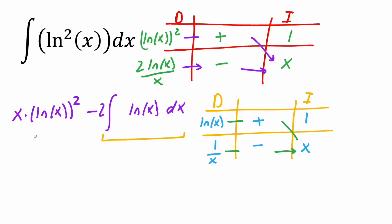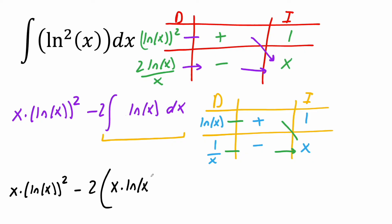Let's write it out. The first piece remains: x·ln²(x). Then minus 2, parentheses: ln(x) times 1 times x, which is x·ln(x). Then I have the integral — this piece times negative 1 is negative, and this piece times x is 1 — so minus the integral of 1 dx, close parenthesis.